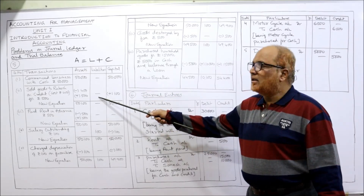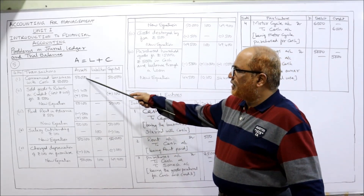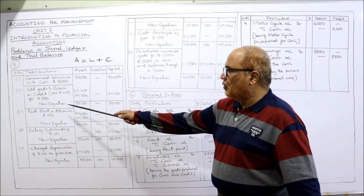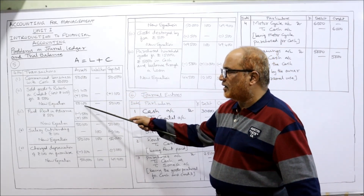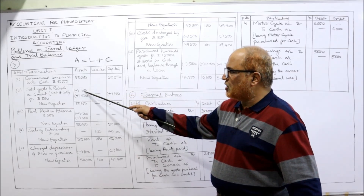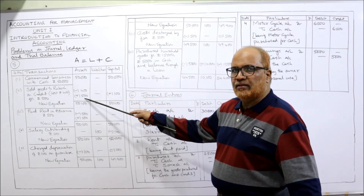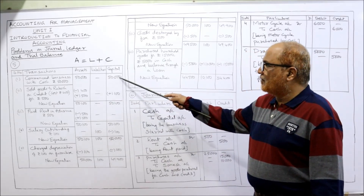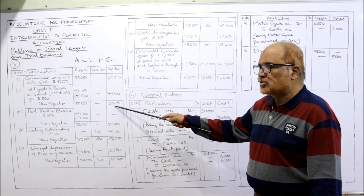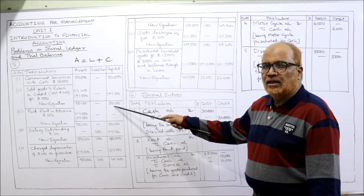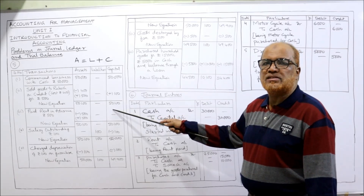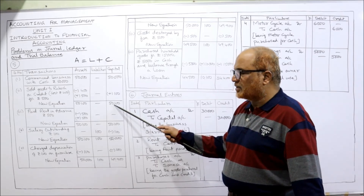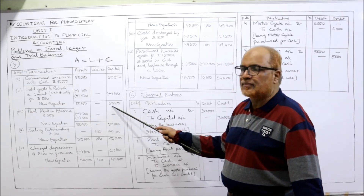New equation after transaction 2: 50,000 − 400 + 500 = 50,100 in assets. Liability remains zero. Capital: 50,000 + 100 = 50,100. So Assets = 50,100; Liabilities = 0; Capital = 50,100.